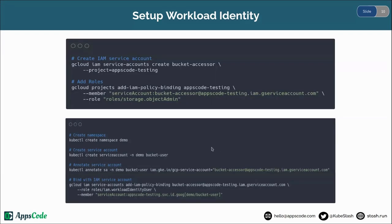Here are the commands to set up Workload Identity using gcloud CLI. We are creating an IAM service account named bucket-accessor. After that we are adding the required role, then we are creating a Kubernetes service account named bucket-user. After that we are annotating this service account, and finally we are binding that service account with the IAM service account. Let's execute these commands.